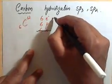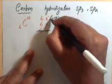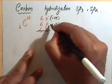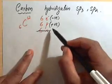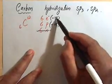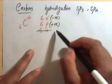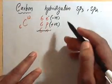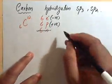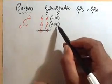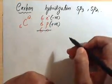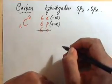An electron is negatively charged and a proton is positively charged. So whenever we are talking about bonding, chemical reactivity and the chemical properties of an element, it is the negative and positive charges that are actually taking part in attracting other atoms. They are basically involved in covalent bonding as well as ionic bonding.